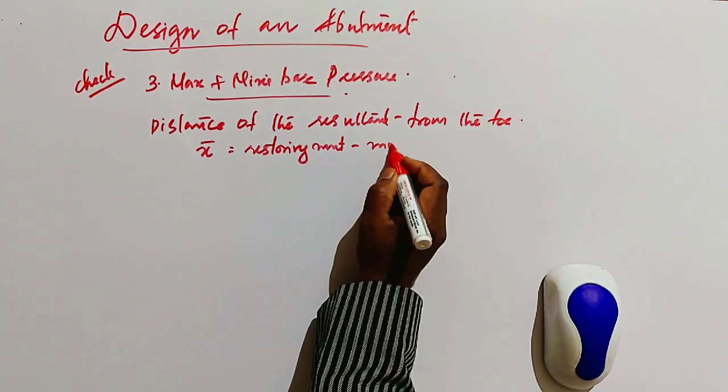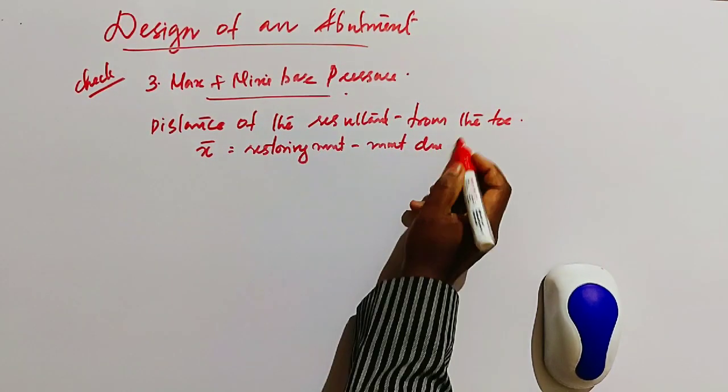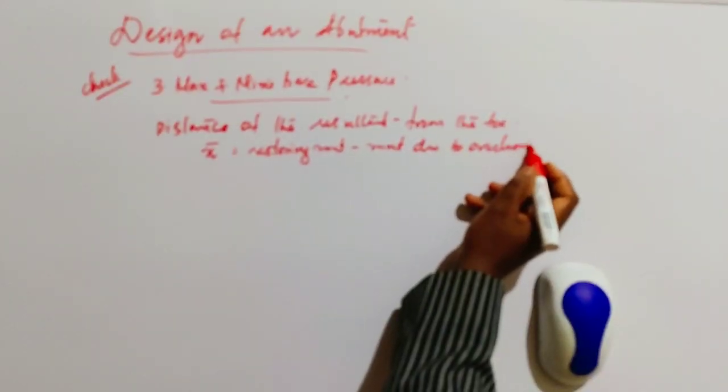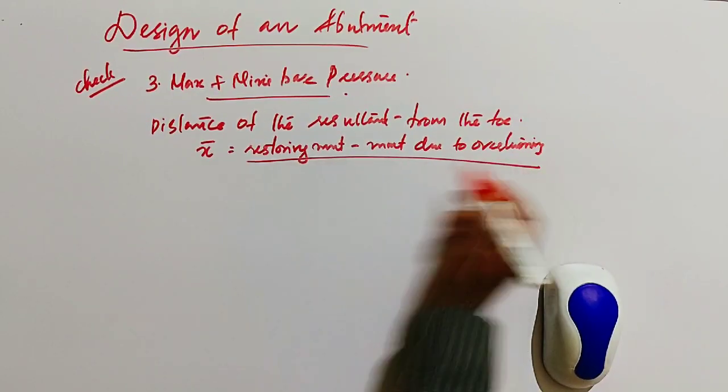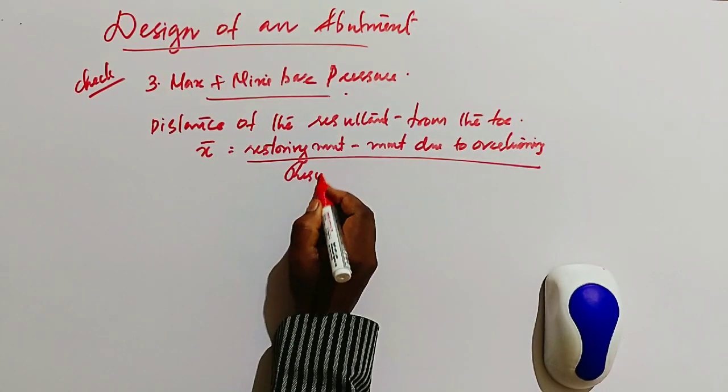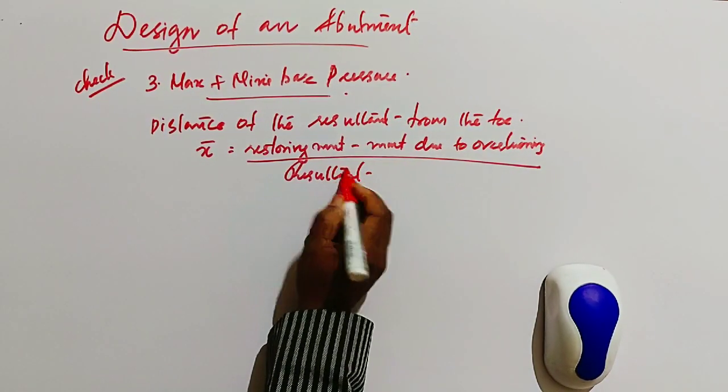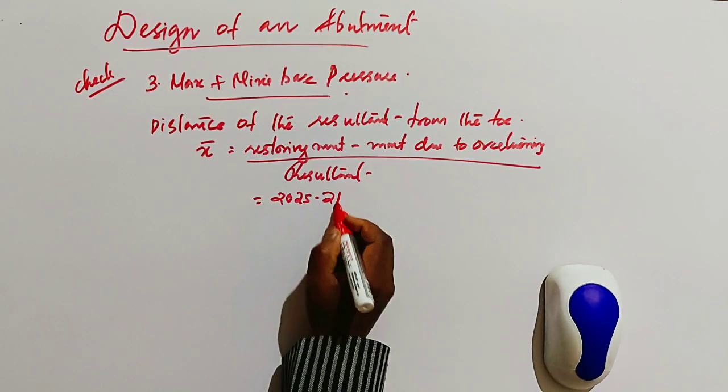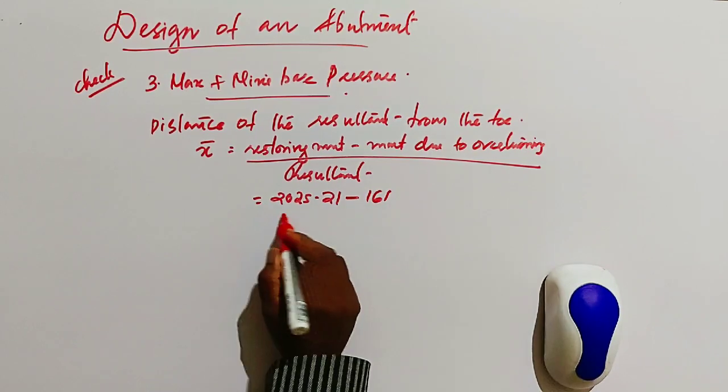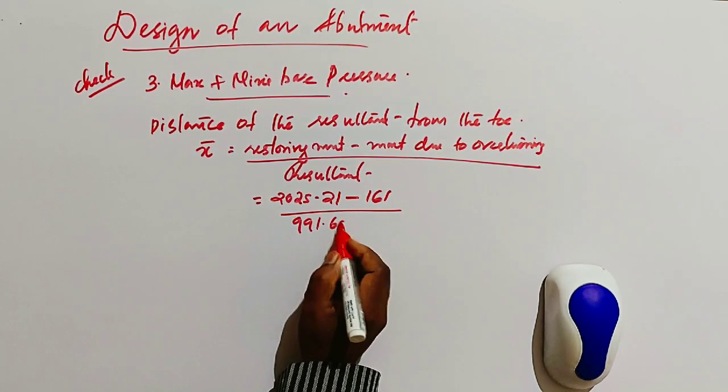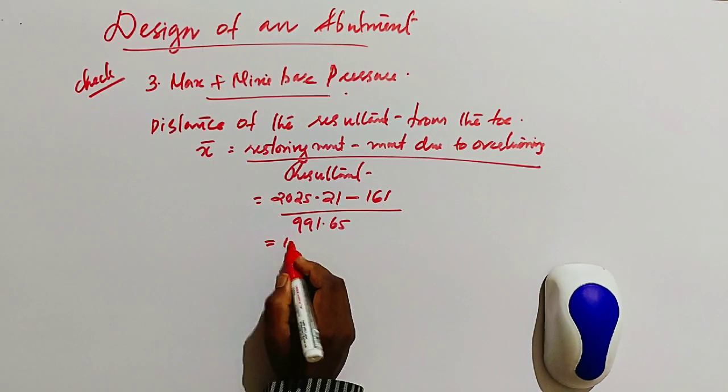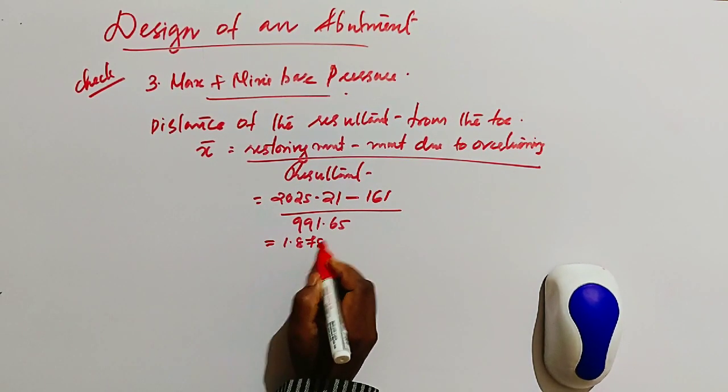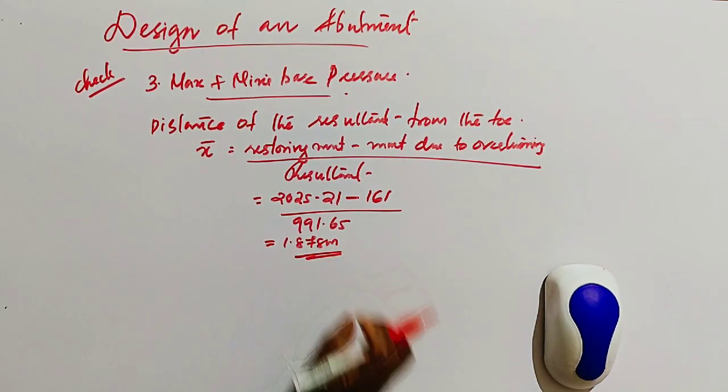The restoring moment we calculated, moment due to overturning also calculated. It is 2025.21 minus 161 divided by resultant, it is 991.65. The answer is 1.878 meter. X-bar equal to 1.878 meter.